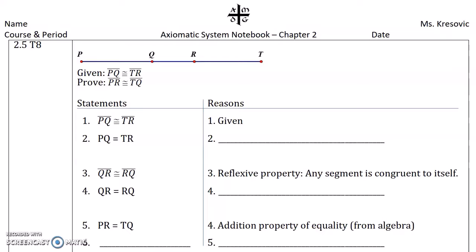In our system, in order to do the homework for 2.5, there are a few theorems that we are going to need to prove first.